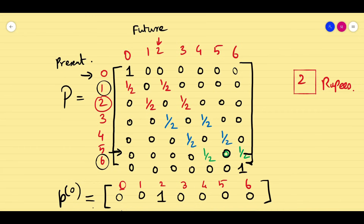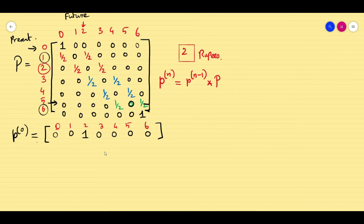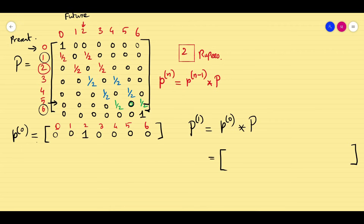We have to find what happens after play 1. p_n = p_{n-1} × P (the transition probability matrix). We are going to multiply p0 by P to find p1. Initially the gambler has 2 rupees with probability 1. When he bets, he may lose 1 rupee or gain 1 rupee with probability 50-50 — losing 1 rupee is 1/2 and gaining 1 rupee is also 1/2. So p1 = (0, 1/2, 0, 1/2, 0, 0, 0).